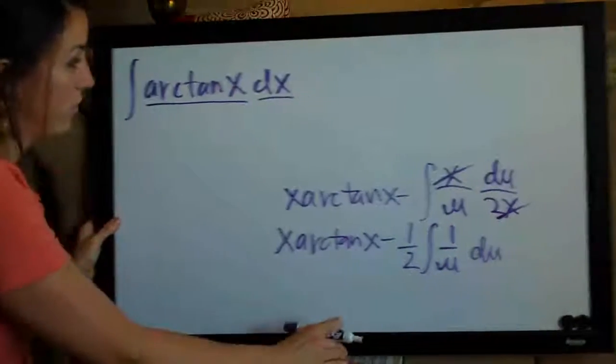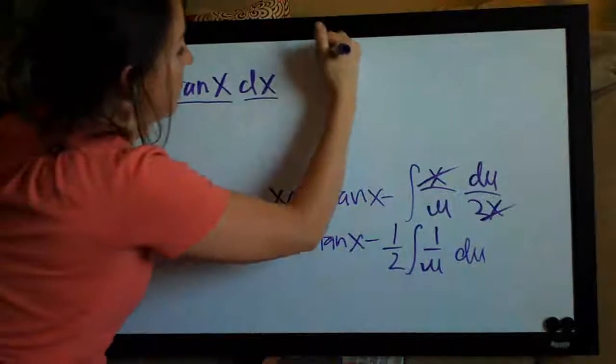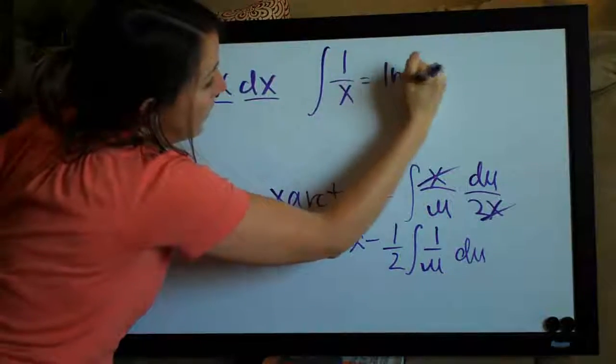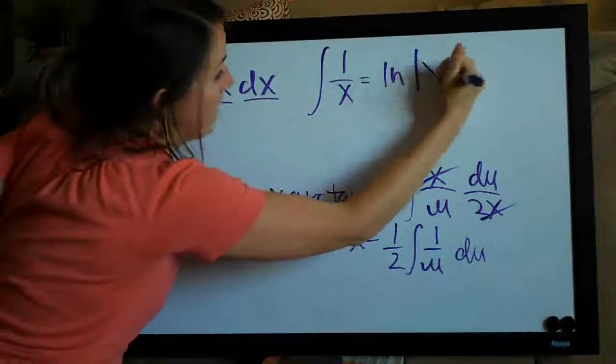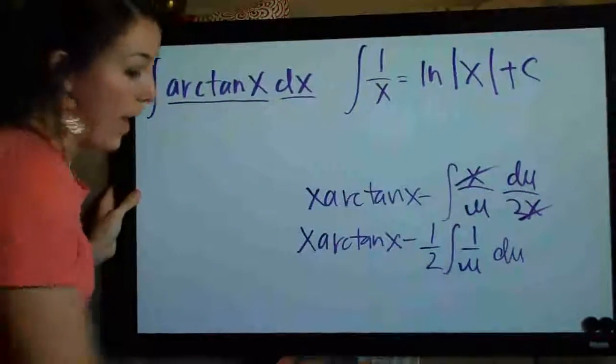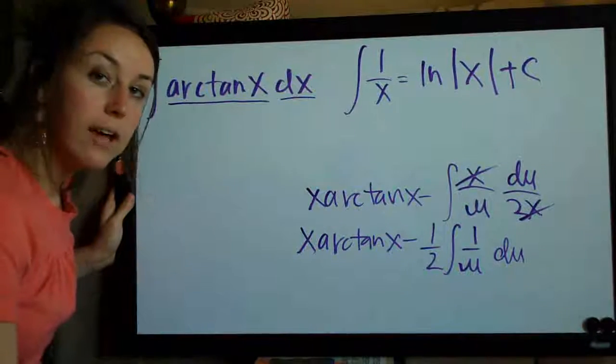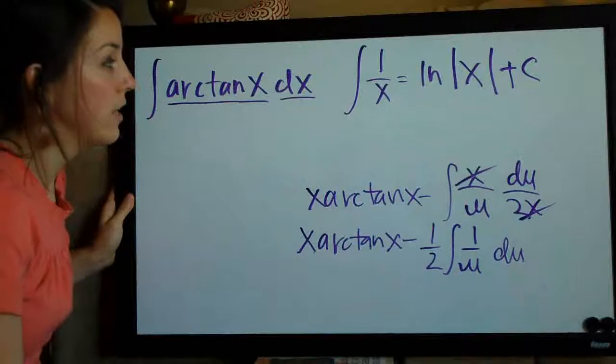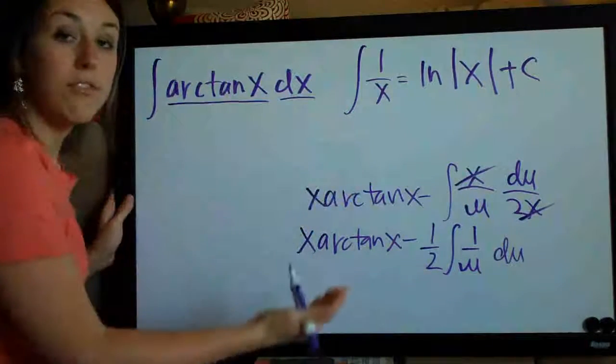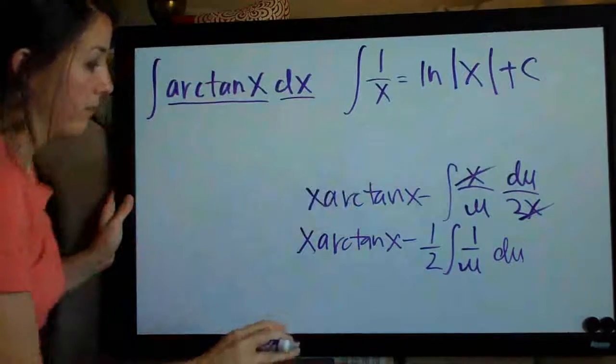So the integral, here's another rule for you. The integral of 1 over x equals natural log or ln of the absolute value of x plus c. This is something that you should absolutely have memorized because it comes up so often that it's important to know it off the top of your head so you can be quick.